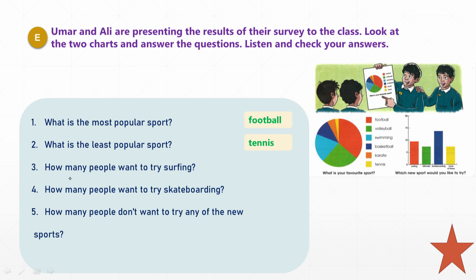Number three: how many people want to try surfing? The number of students who want to try surfing — a water wave sport — was nine people. Number four: how many people want to try skateboarding? The answer is 13 students. The last question: how many people don't want to try any of the new sports? Seven people.